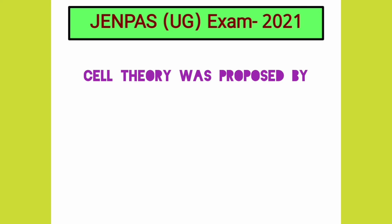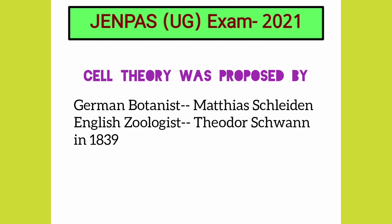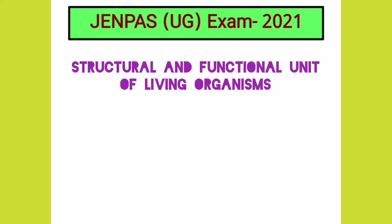Cell theory was given by which scientists? Cell theory was put forward by German botanist Matthias Schleiden and English zoologist Theodor Schwann in the year 1839.